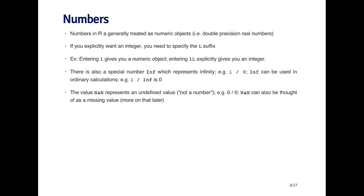There's another special value called NaN, and this represents an undefined value - you can think of it as not a number. For example, if you take 0 over 0, that's not defined, so you'll get a NaN back. NaN can also be thought of as a missing value, but we'll talk more about missing values later.